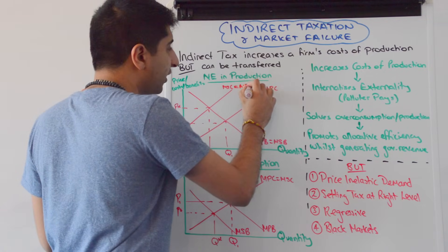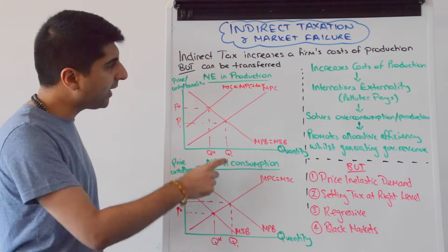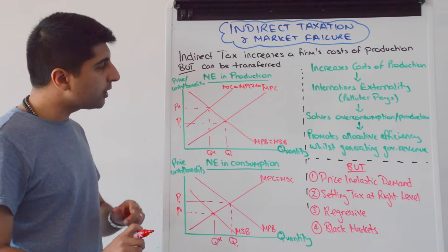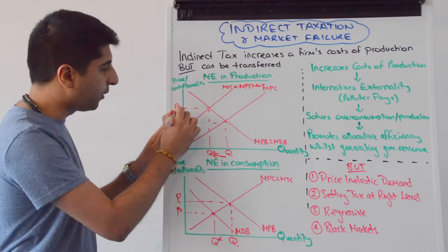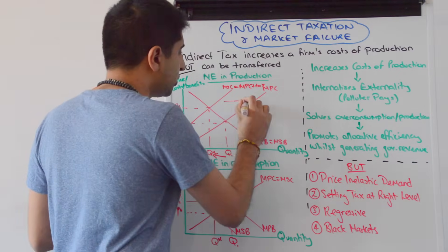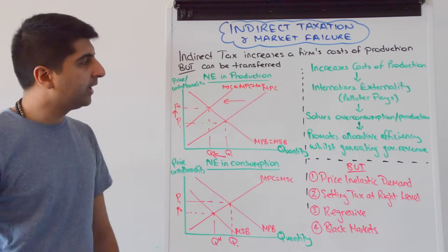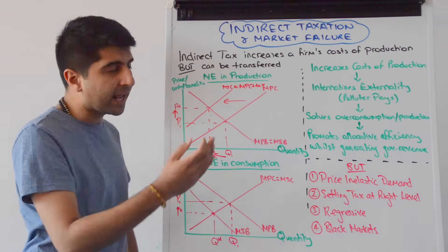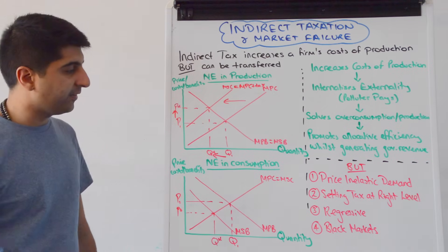The new MPC curve — let's call it MPC plus tax — is now equal to the marginal social cost. That means the new equilibrium in the market is at Q-star, and there's a P-star. So that clearly indicates a shift has taken place. We're assuming the tax is perfect here, hitting MSC and thus getting to Q-star. Remember that a tax increases a firm's cost of production, so it's always the MPC curve that shifts to the left.